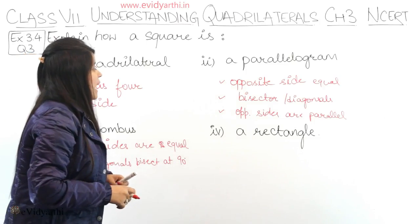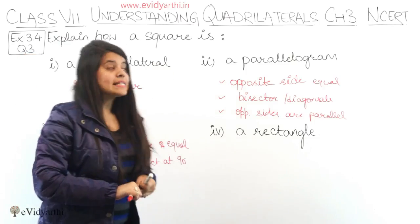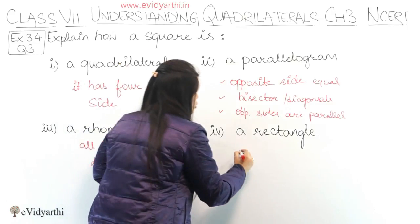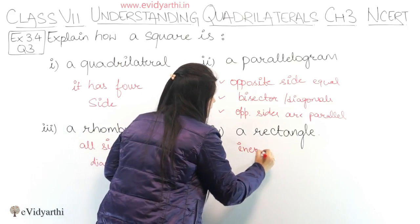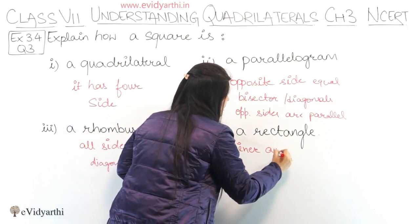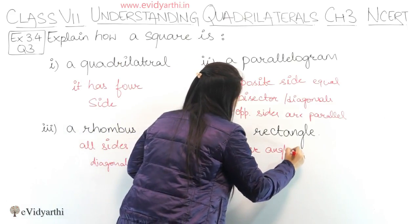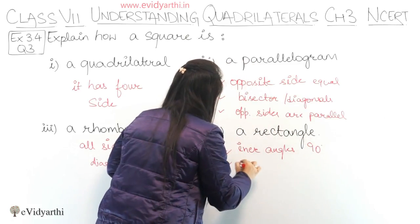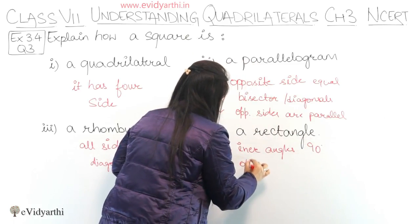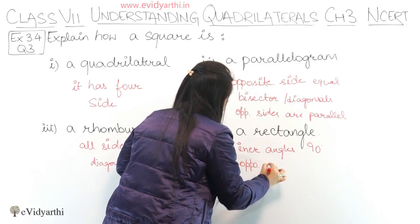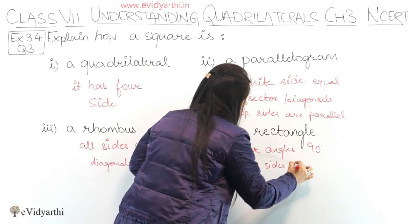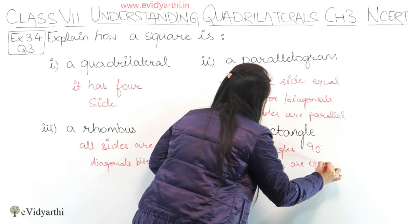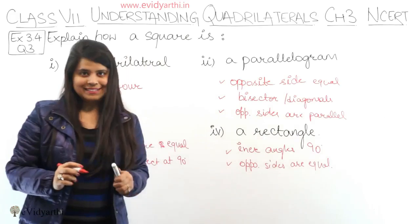Last, we have a rectangle. Why can we say a square is a rectangle? Well, दोनों में interior angles होती हैं — they are 90 degrees. Also, दोनों में opposite sides are equal. So we can say that a square is a rectangle.